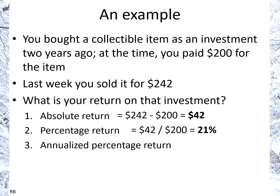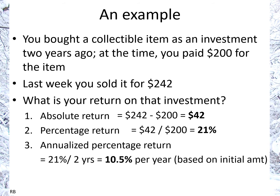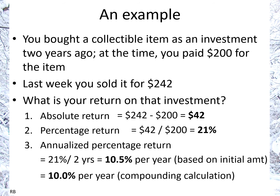The annualized return: since you paid for the investment two years ago, that would be 21% divided by two years, meaning each year it's 10.5% per year. That's based on the initial amount. There's also a way of calculating on a compound basis, which would turn out to be 10% per year compounded annually — I'll leave that calculation for another presentation.